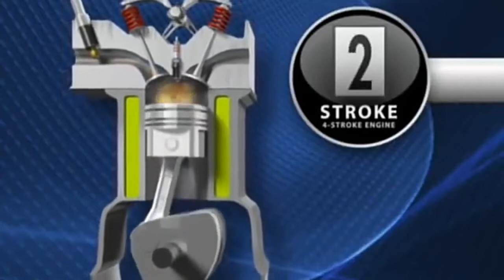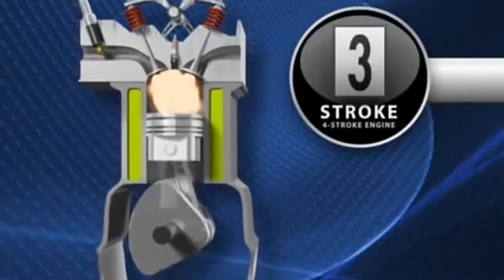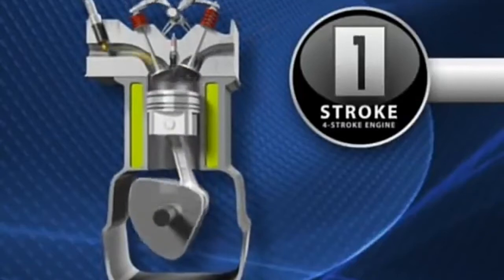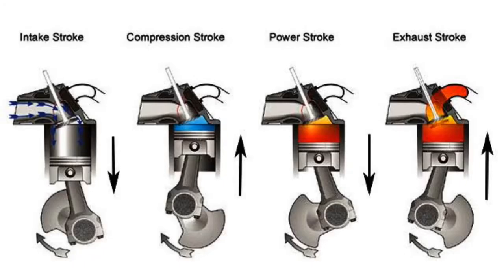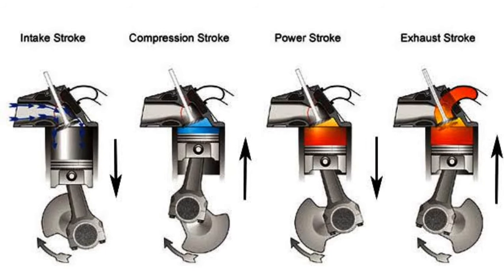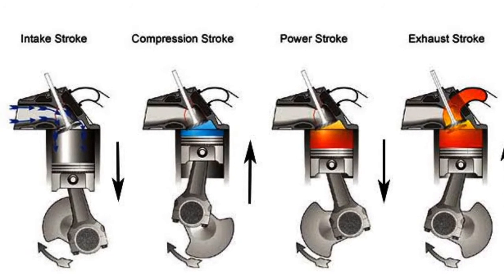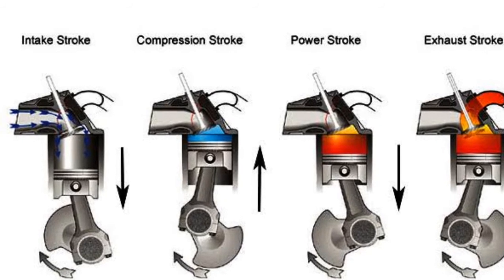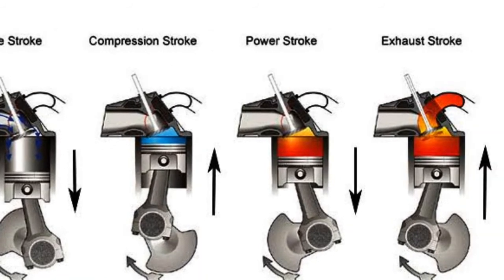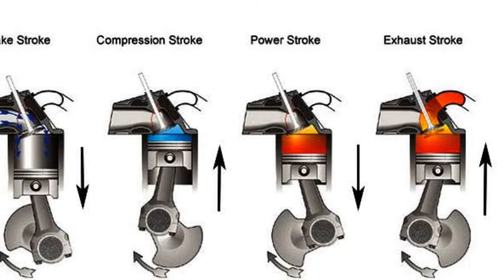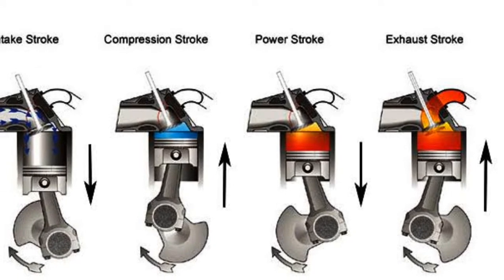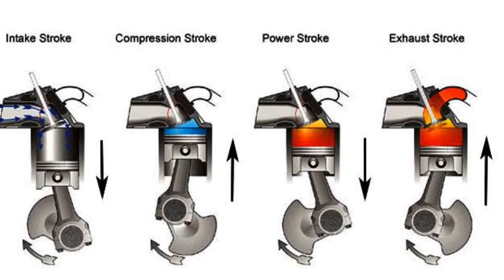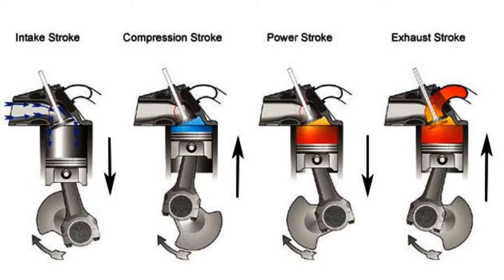The CI engine replaces the spark plug with a fuel injector. The compression stroke of this engine raises the air temperature to the auto-ignition temperature of the fuel by compressing it to a high temperature. Combustion is then initiated by spraying the fuel into the combustion chamber, where the air is already at a high temperature, commencing combustion.